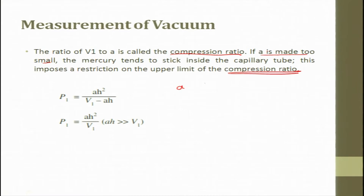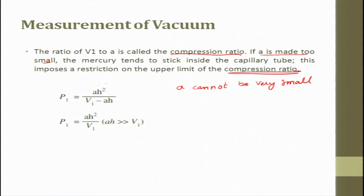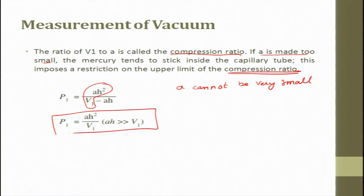A cannot be very small — if it is very small, the system fails. So P1 = AH² / (V1 − AH). With this we can try to measure the vacuum pressure.